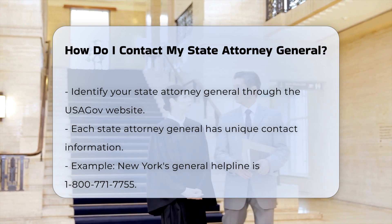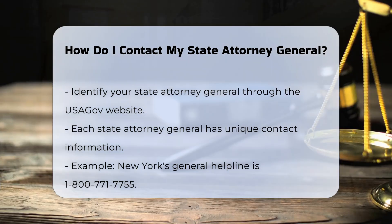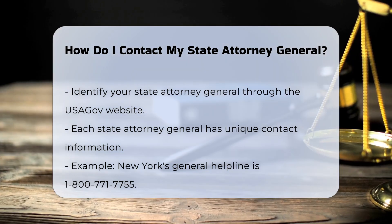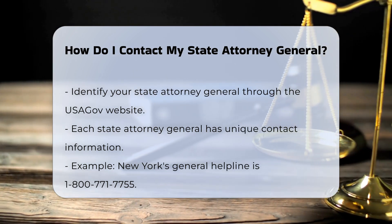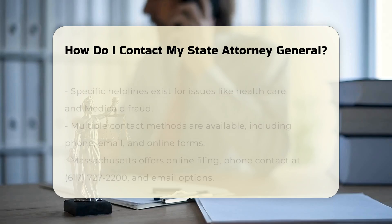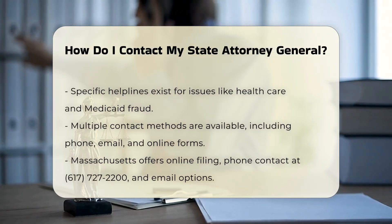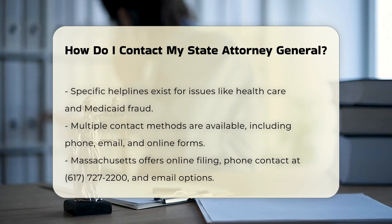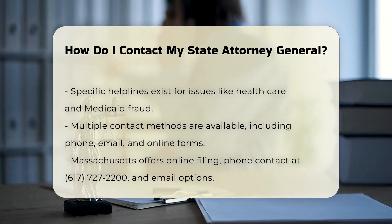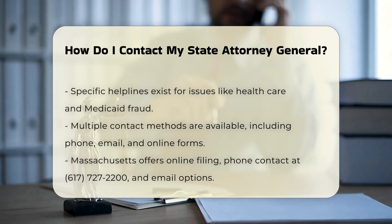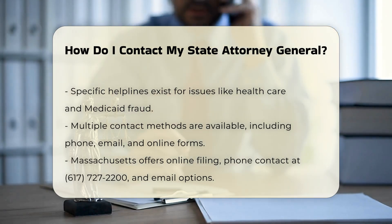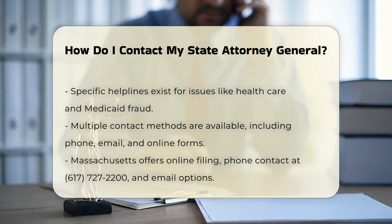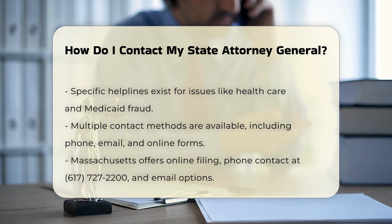Contact information. Each state attorney general's office has its own contact details. For example, if you are in New York, you can reach the office of the New York State Attorney General through their general helpline at 1-800-771-7755. They also have specific helplines for health care, Medicaid fraud, and reproductive rights.